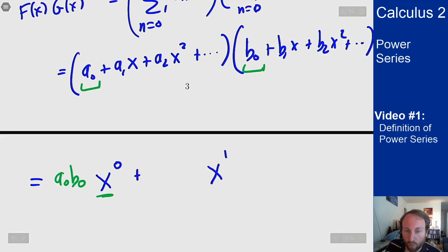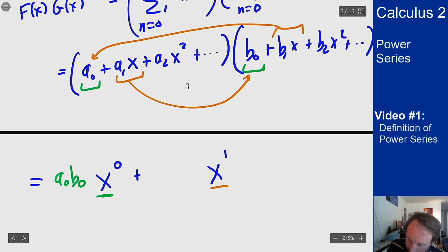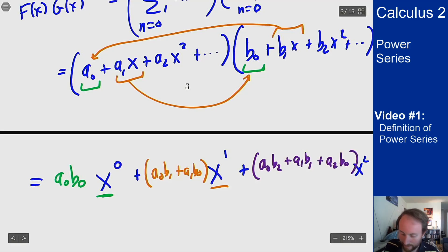How do I get x to the one? Well there are two ways to get x to the one. I either pair this x to the one with this x to the zero or I pair this x to the one with this x to the zero. The coefficient here is going to be a_0 b_1 plus a_1 b_0. If you keep going with this for x squared there's going to be three ways to make it happen. I can either pair a_0 with b_2, I can pair a_1 with b_1, or I can pair a_2 with b_0 and this continues.